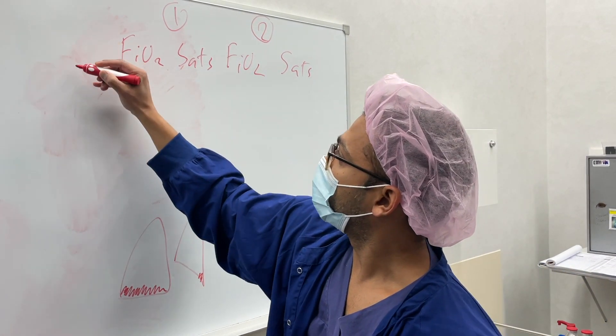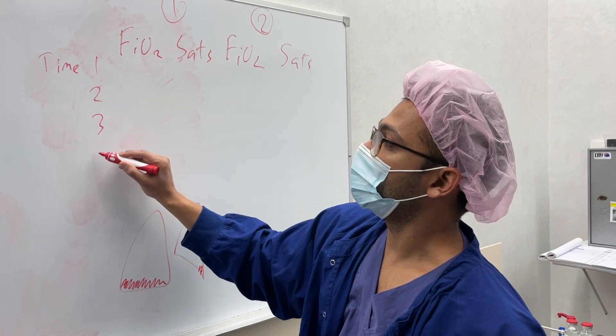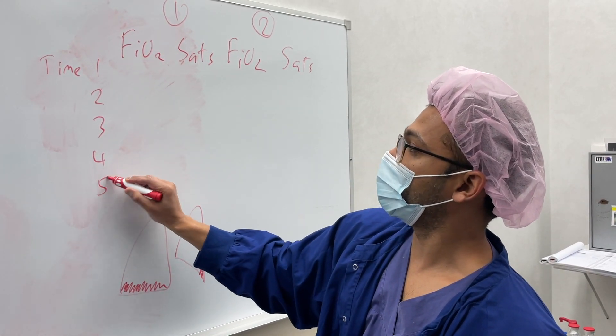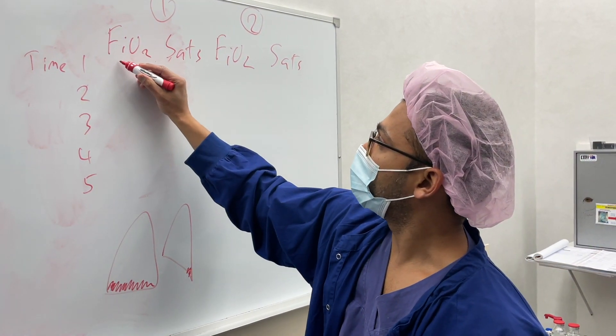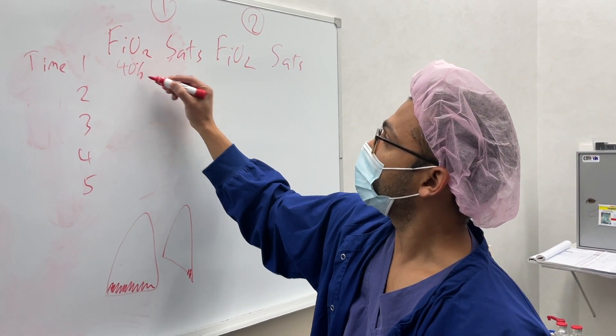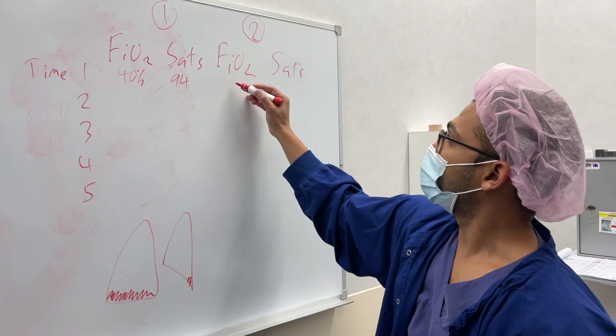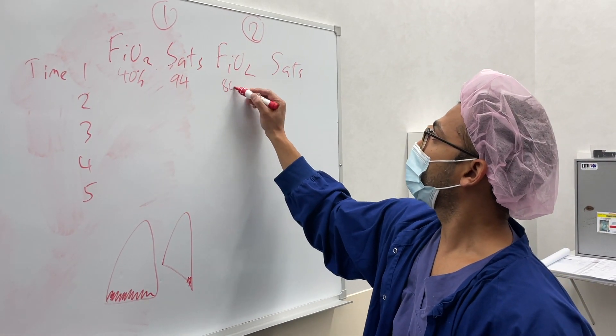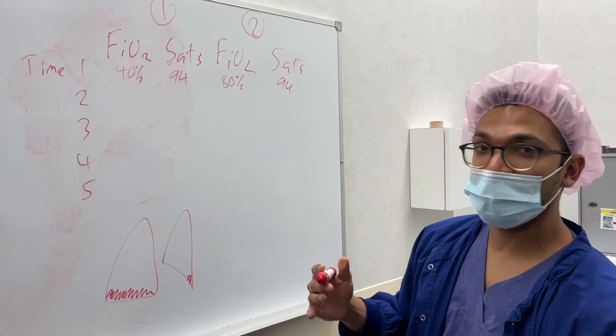I've got Time 1, 2 - these are just arbitrary numbers. If I start with a low FiO2, let's say 40%, and the Sats are not great but they're okay at 94%. Versus FiO2 that's say 80%, the Sats are still about 90% because the lungs are equally as bad.